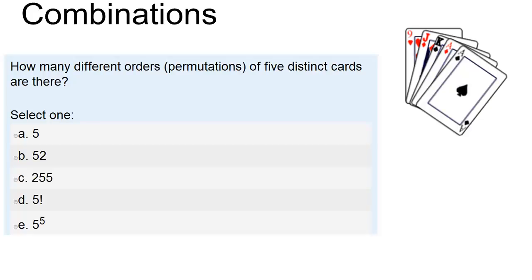Here's my new question dealing with combinations: how many different orders or permutations of the five cards that I've been dealt are there? Is it 5 factorial or 5 to the exponent 5? So given that I've been dealt five distinct cards, how many permutations of those five cards are there?